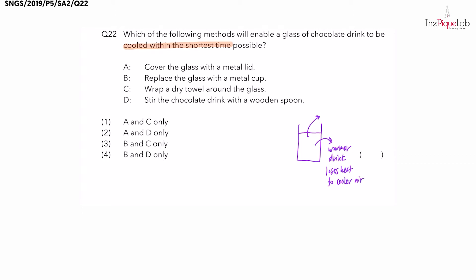Let's take a look at the four possible methods. The first one: covering the glass with a metal lid. Do not let the material of the lid distract you from the action of covering the glass. What happens if you cover the glass with a lid made of any material? You're going to trap air under the lid. Air is actually a poor conductor of heat. So that trapped air is going to cause the drink to lose heat much slower. This method is definitely not going to work in cooling the drink quickly.